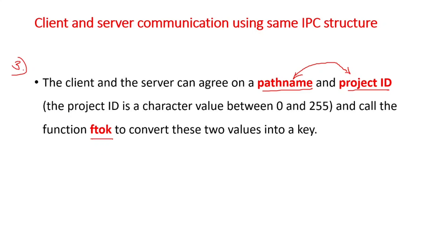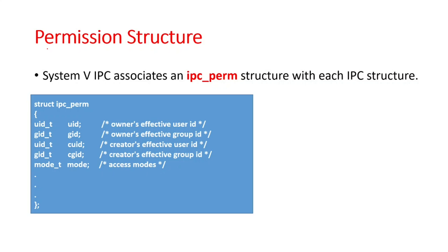So these are the various ways a client and server can communicate using the same IPC structure. Now let us look at the permission structure. System 5 IPC associates an ipc_perm structure with each of the IPC mechanisms — message queues, shared memory, and semaphores — and each of these structures has an associated IPC permission structure.